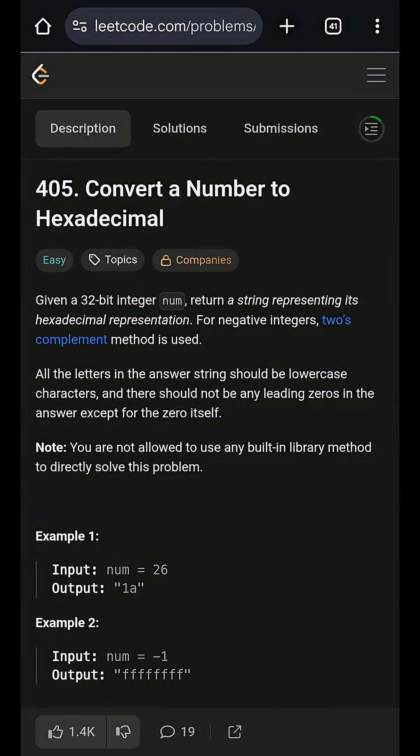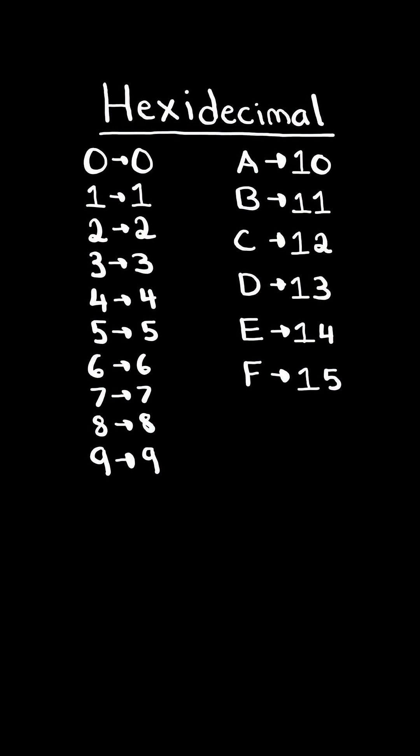Convert a number to hexadecimal. Hexadecimal is a base 16 numerical system that uses 16 symbols to represent numbers. The symbols 0 to 9 represent the numbers 0 to 9, and the symbols a to f represent the numbers 10 to 15.